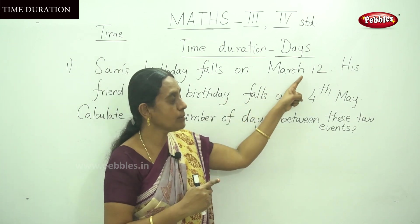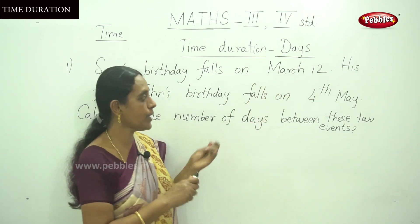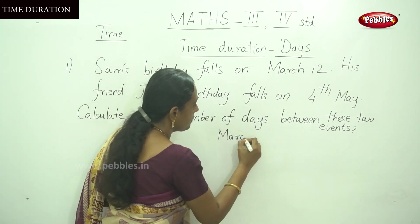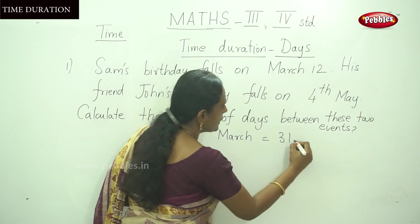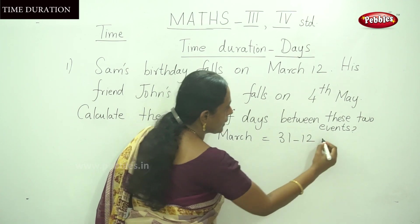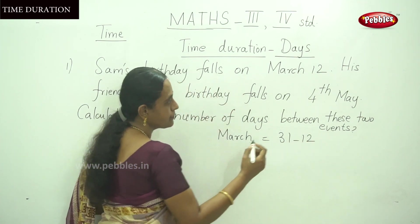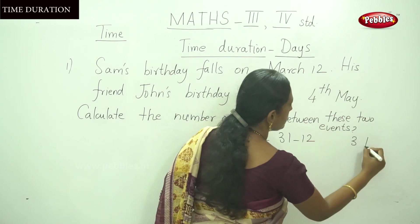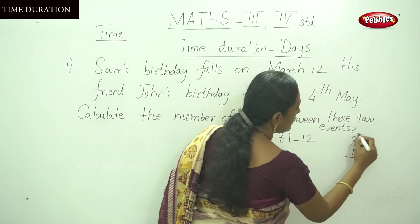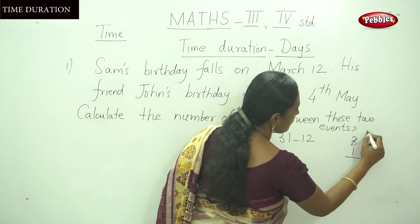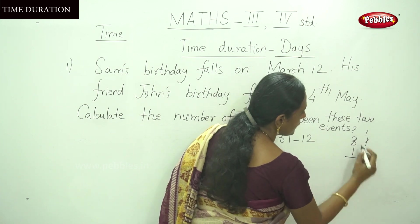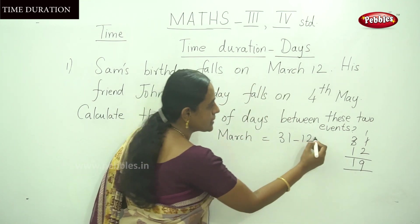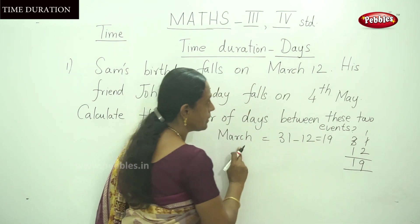So 31 minus 12 for March. Carry over: 11 minus 2 is 9, and 2 minus 1 is 1, so that is 19. Total days remaining in March is 19.